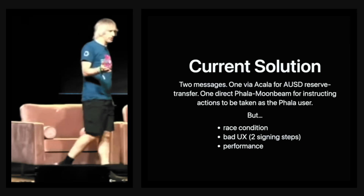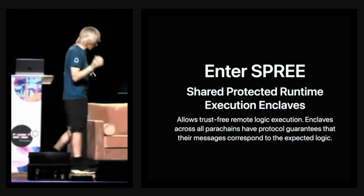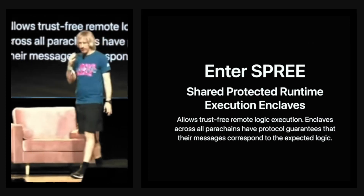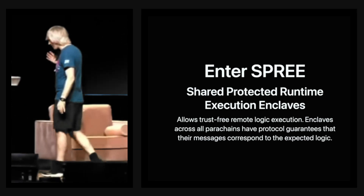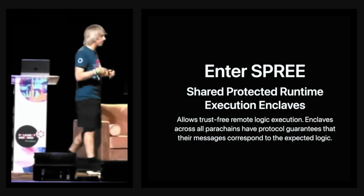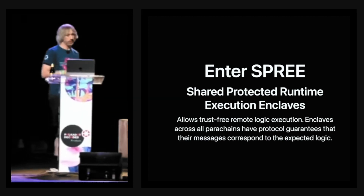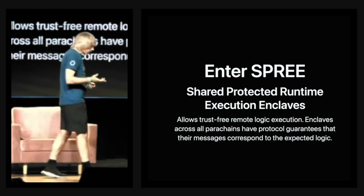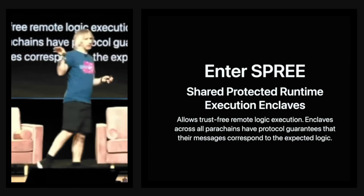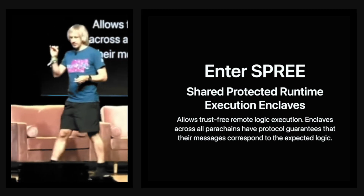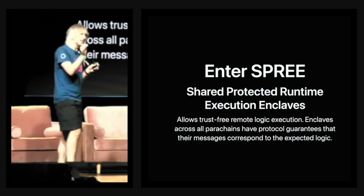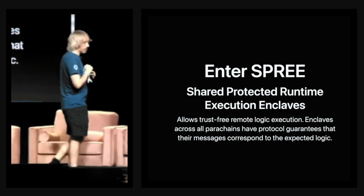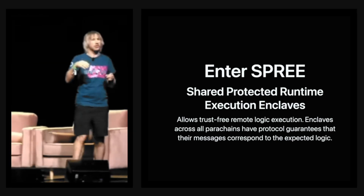XCM can't fix every issue, but there is something they've been working on to improve UX and trust relationships — the answer is SPREE. SPREE has been referenced before in a fairly circumspect fashion, but there are real ecosystem use cases that teams want solved that can only be solved this way. What SPREE does is allow trust-free remote logic execution. In Polkadot, we can make sure each parachain adheres 100% to the logic it sets for itself, ensuring no transactor can cheat the chain.